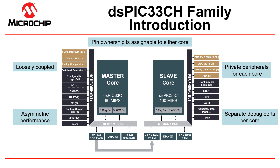The master core's flash will contain the master core code as well as the slave code. During boot time, the master will transfer or copy the slave code image from its program flash into the slave core's program RAM and then enable the slave core to start execution. After this, the slave core can run independent of the master core.